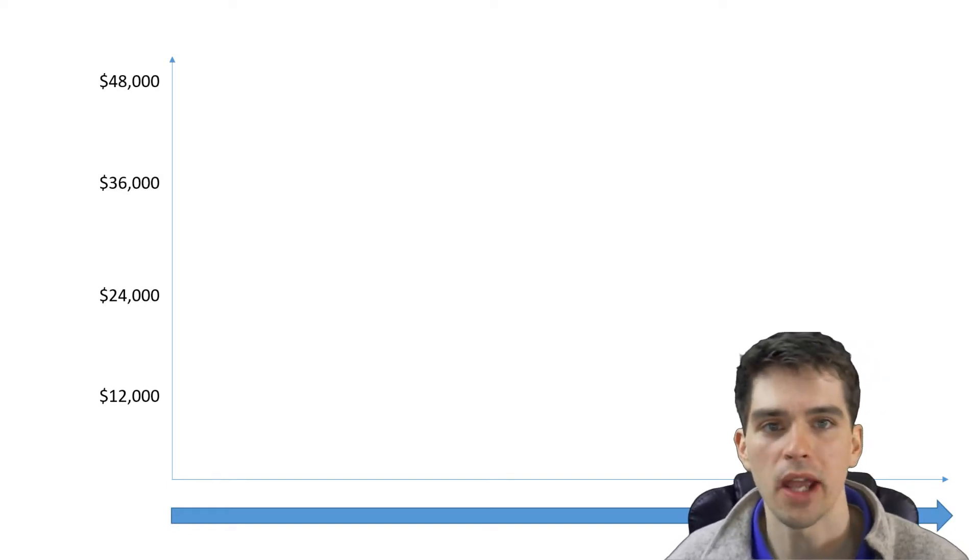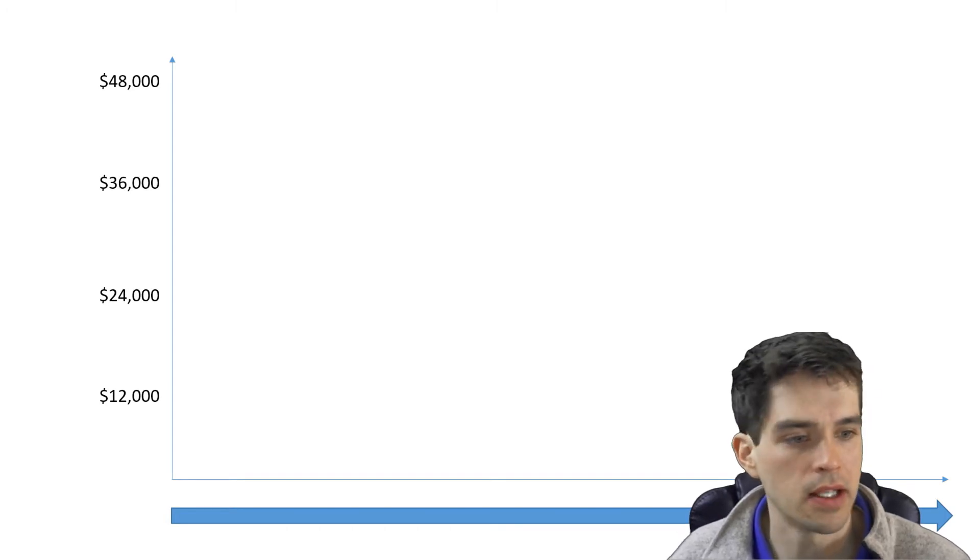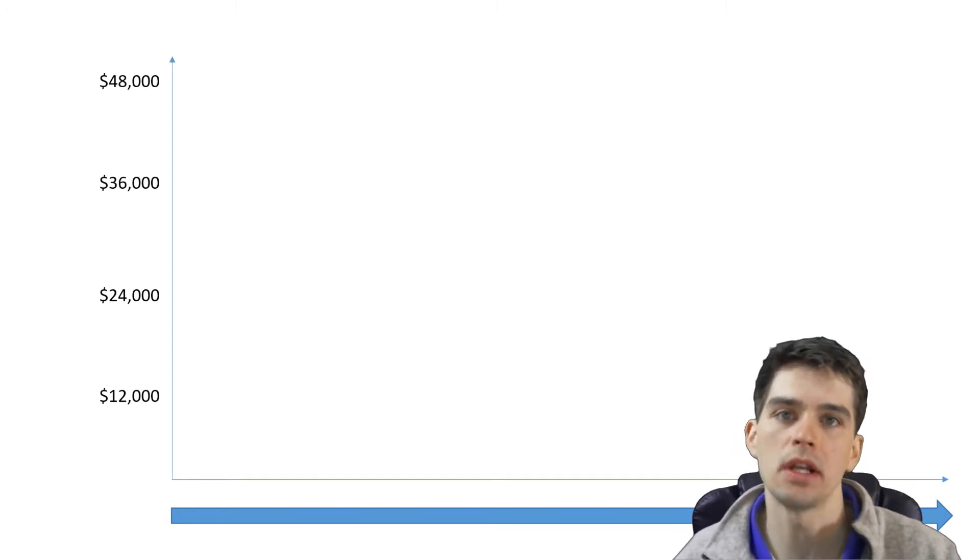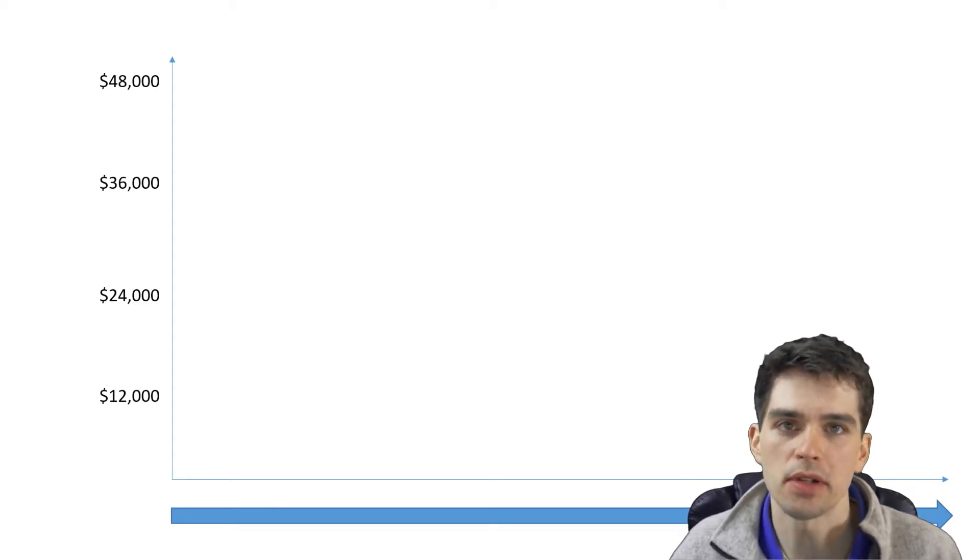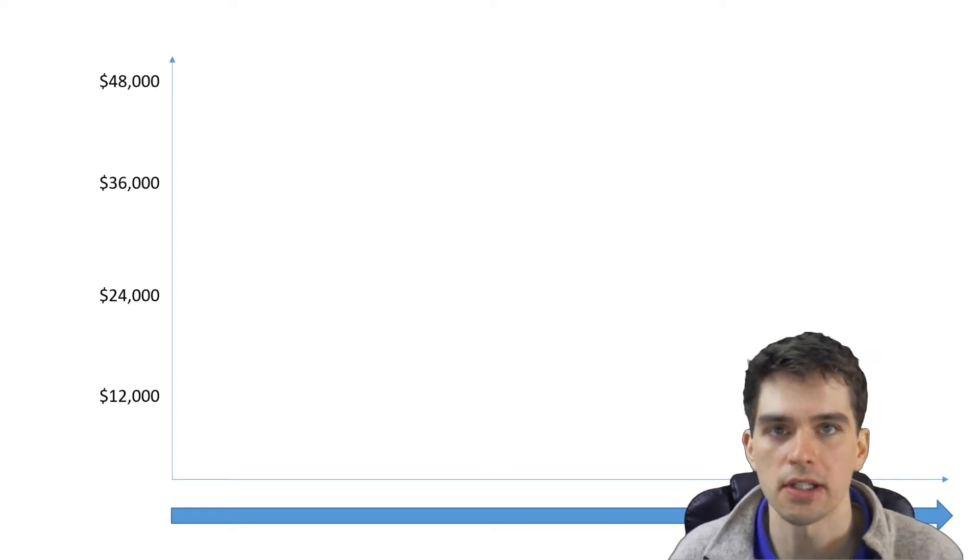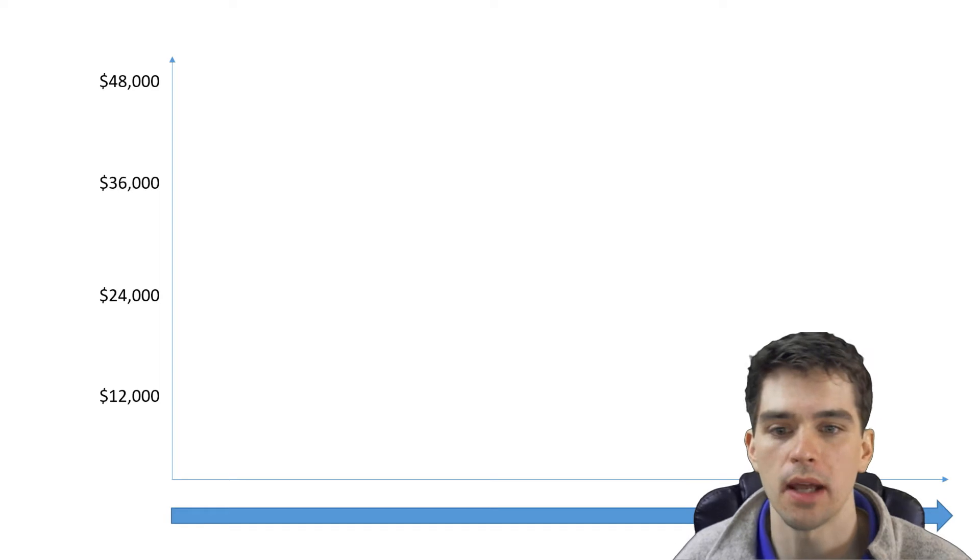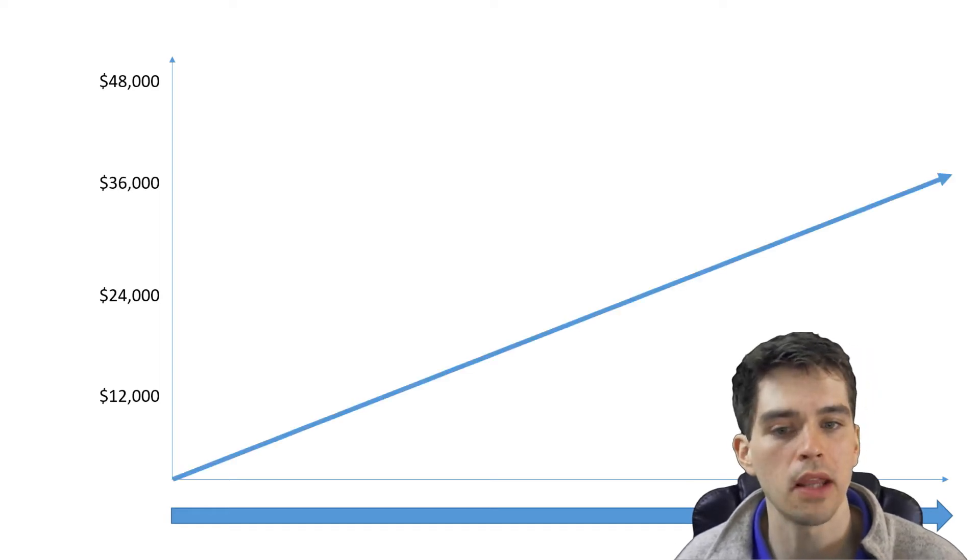Imagine here we have a graph showing the total income a person earns throughout the course of a year and this bottom arrow represents the course of a year going on from January on through to December. Now let's say this person has a salary of $3,000 a month or $36,000 a year. This is their gross income and we could represent this showing the cumulative money they earn over the course of the year as this arrow.